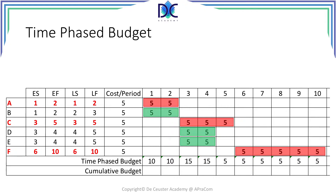How do we get the cumulative budget? We take the cost in a given period and add it to all the costs we have until then. So for period 1 it's very simple — it's 10 plus nothing from the previous period, so it's 10. For period 2 it's 10 plus the cumulative cost of period 1, which gives us 20. For period 3 it will be 15 plus 20, equals 35.